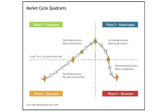Each of these quadrants are characterized by specific characteristics. Recovery would be declining vacancy and no new construction. You would then go into expansion from six points — the six point to eleven point — where you'd see declining vacancy and new construction beginning. Then new construction is still delivering in the hyper supply phase with vacancy increasing, and then decelerating vacancy and more completions happening in the recession.